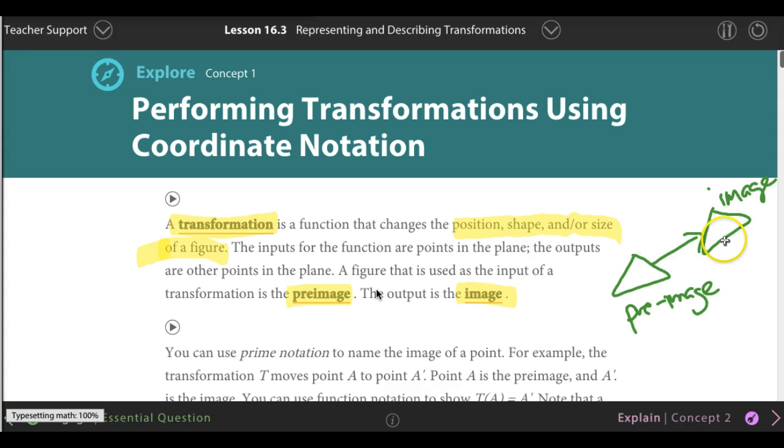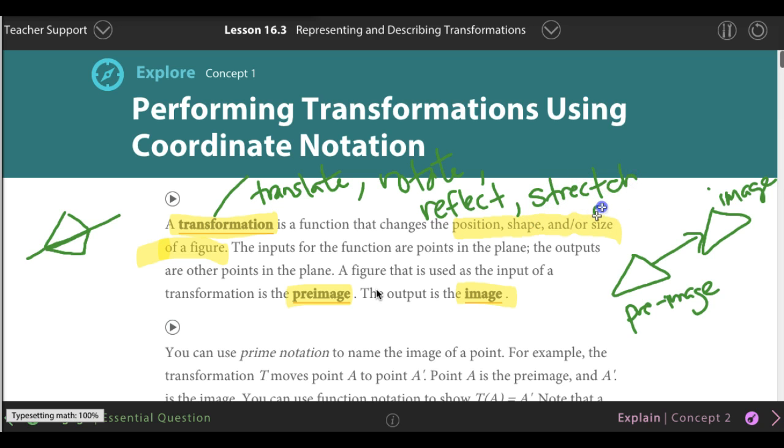What I did was I moved it. That's called a translation, which is basically a part of transformation. Within transformation, there are many things. You can translate, which means move it, or you could rotate. Or you can reflect. That means if you have a triangle here and you want to reflect across this line, you're going to have a triangle that looks like that. Or it could be a stretch or compression. Stretch means you make it bigger. A compression is when you have a big image and then you go smaller.